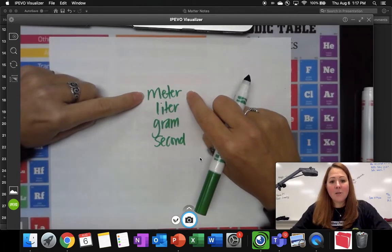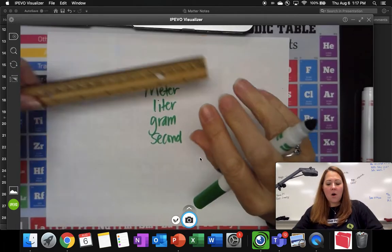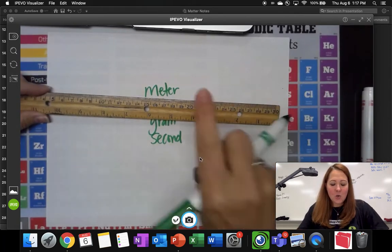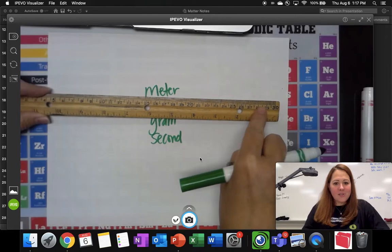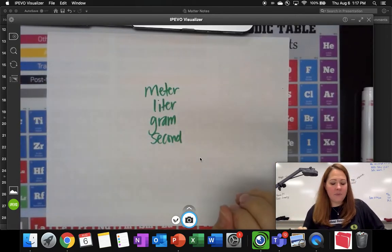The meter is how you measure distance. So on a ruler, like on this side, you have centimeters and millimeters. The meter measures distance, how long is something.